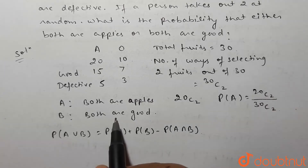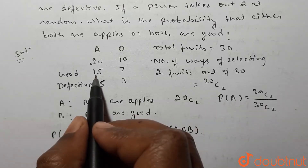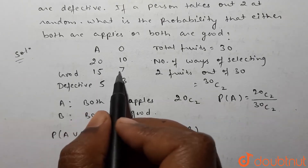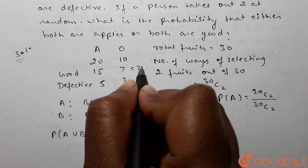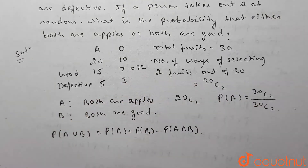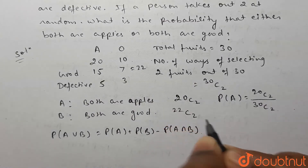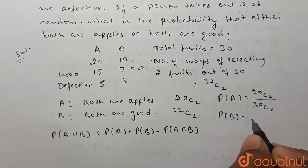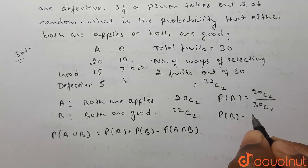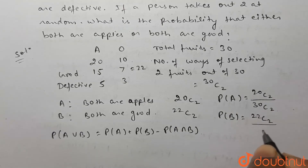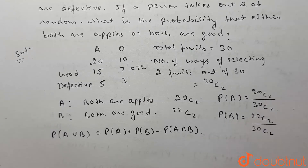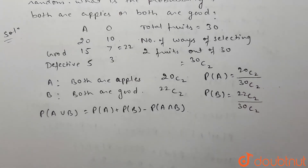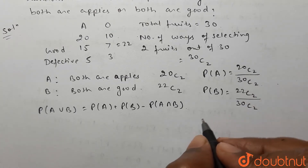B is both fruits are good. Total number of good fruits are 15 plus 7, which is 22. Out of 22 good fruits we have to select two fruits, so number of ways will be 22C2. Probability of B will be 22C2 divided by 30C2.